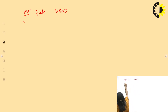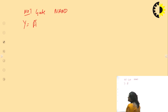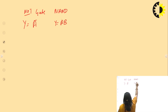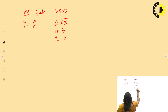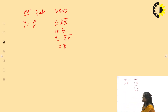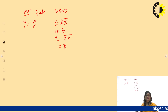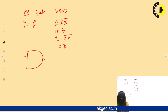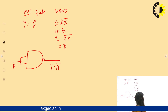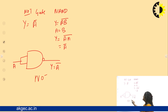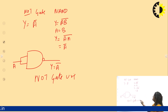To design a NOT gate with NAND: the NOT gate expression is Y = Ā, and the NAND gate expression is Y = (AB)̄. If we put A = B in the NAND gate, the expression becomes (A·A)̄ = Ā. So if we short the two inputs of the NAND gate, it becomes a NOT gate.